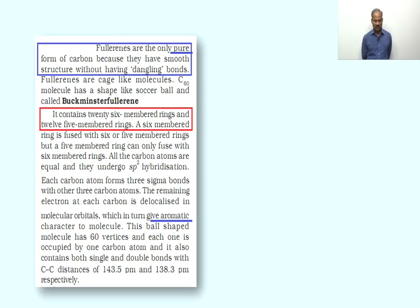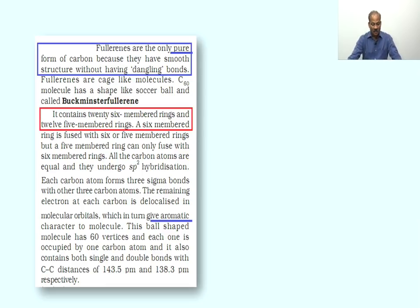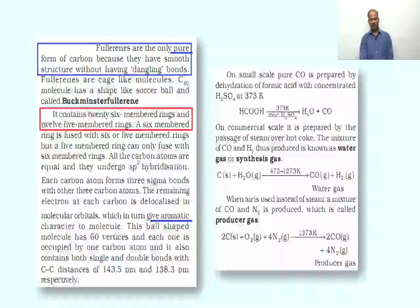This ball-shaped molecule has 60 vertices and each one is occupied by one carbon atom. It contains both single and double bonds with C–C distances of 143.5 pm and 138.3 pm respectively. These are the key structural details of fullerene.